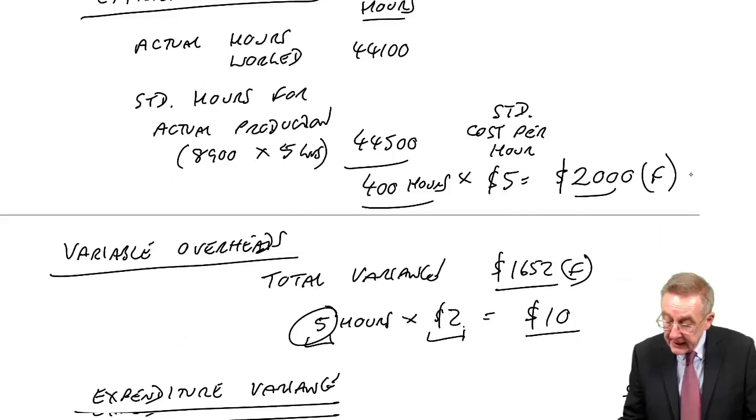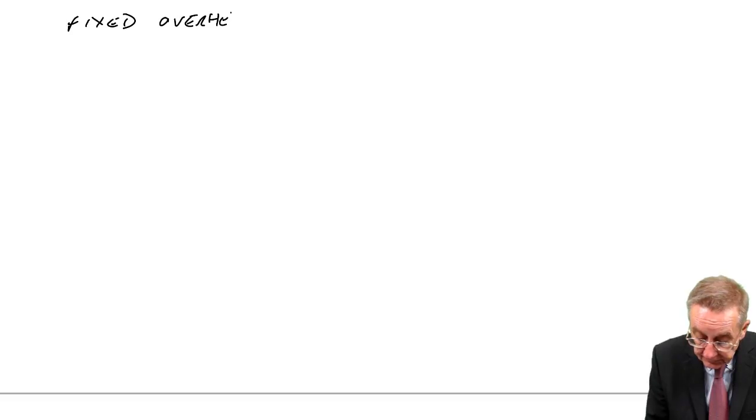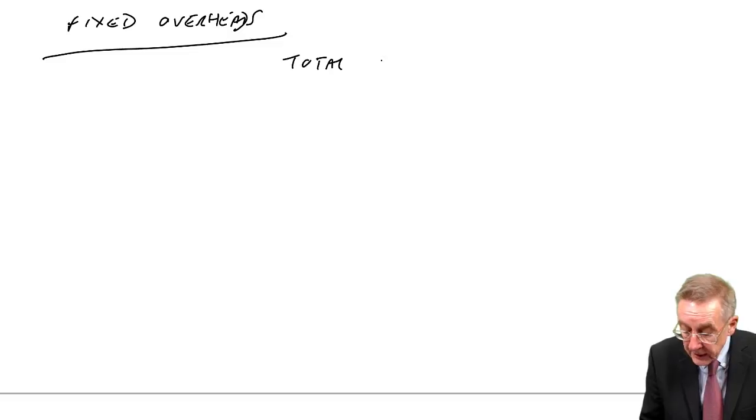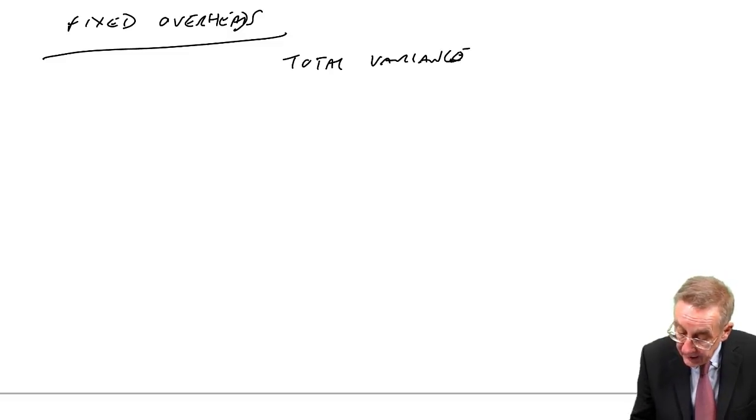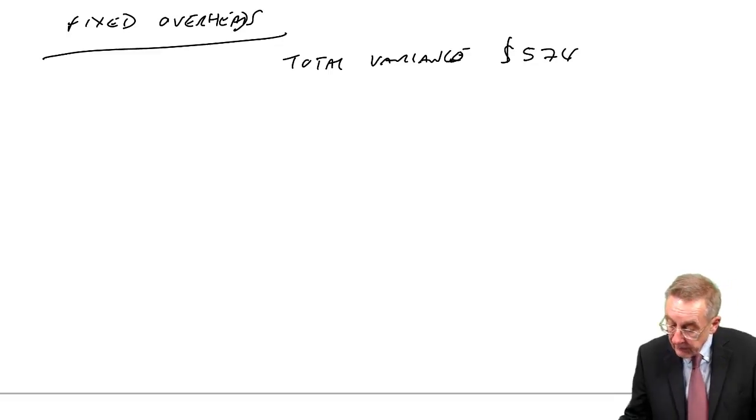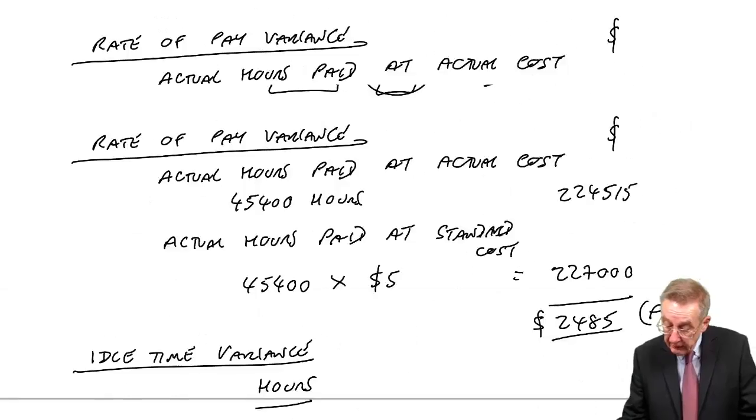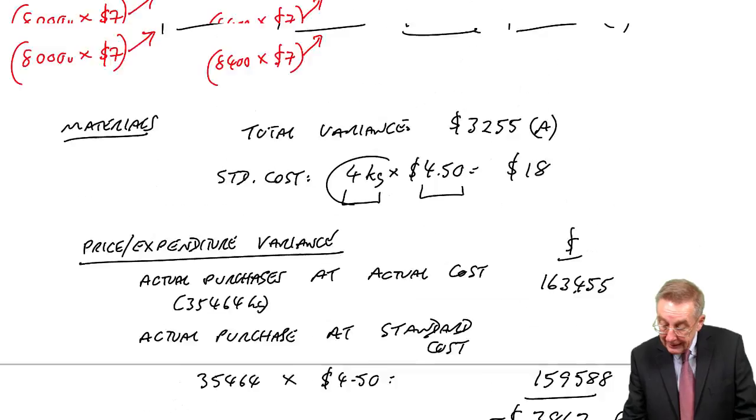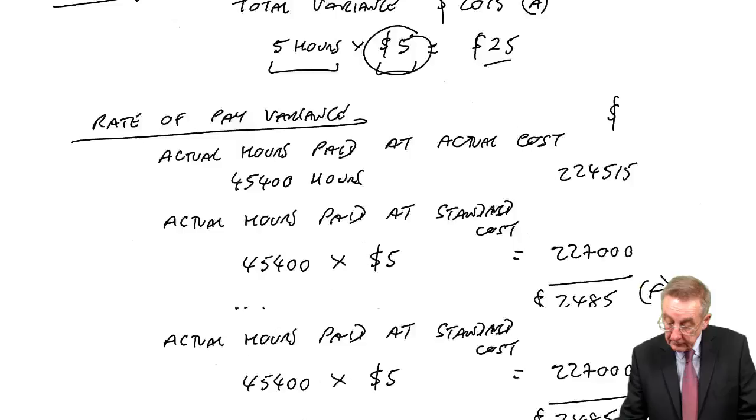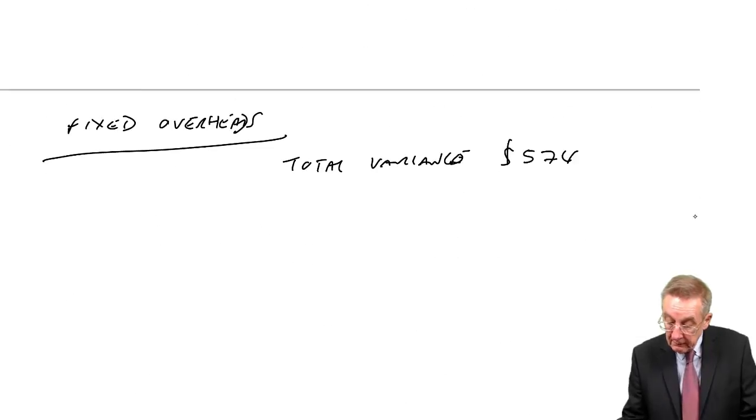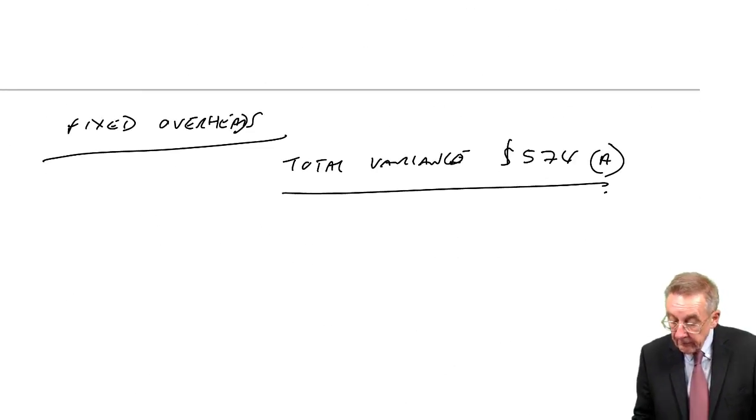And watch what we do. Part of it, I think, is very easy and very obvious. This is fixed overheads, and the total variance we tried to explain was that 574 that we had in our statement. Was it adverse?